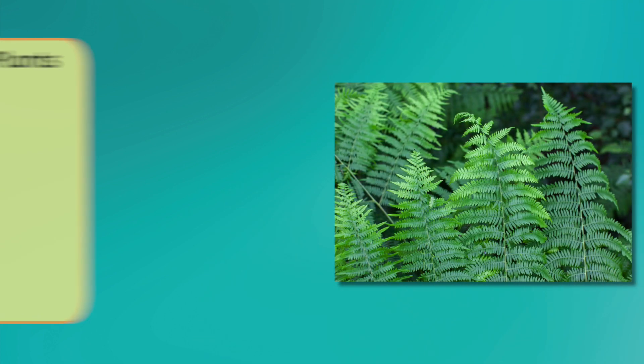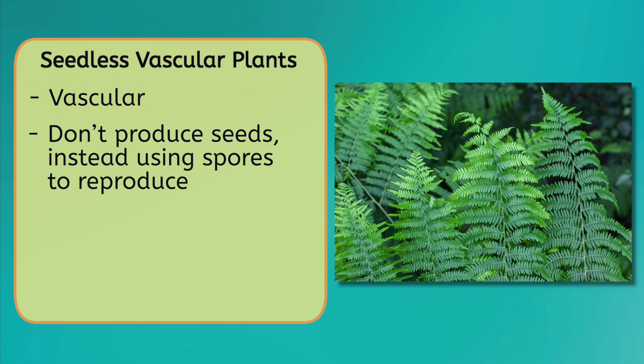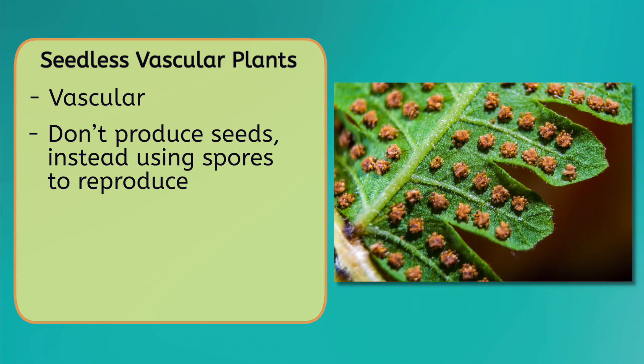The three remaining phyla all have vascular systems and roots, which means scientists use different characteristics to classify them. We'll start with seedless vascular plants, which, as their name implies, are unlike other vascular plants in that they don't produce seeds. Instead, they reproduce using spores, which are released from the underside of their leaves.